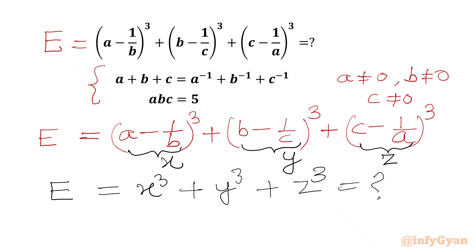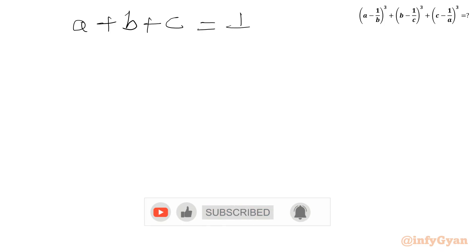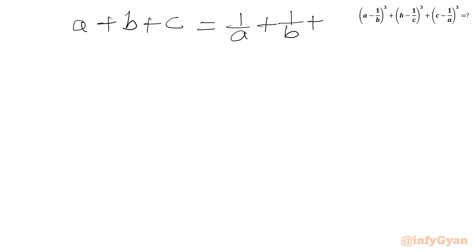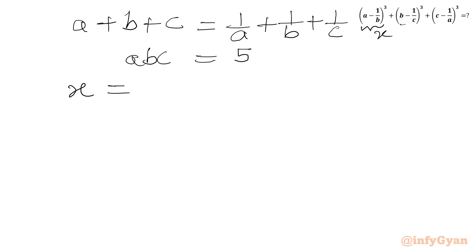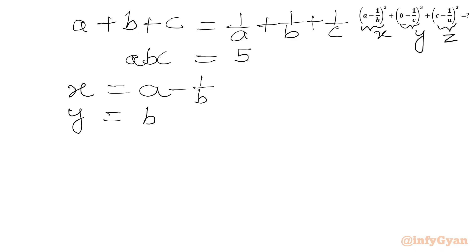Two equations are known to us. We have a plus b plus c equal to 1/a plus 1/b plus 1/c, and a times b times c equals 5. Now, x is (a minus 1/b), and y is (b minus 1/c).